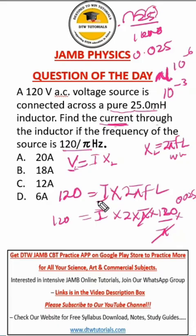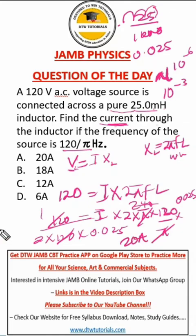Quickly, two times 120 is 240. Instead of multiplying everything, I'll do 1 divided by 2 times 120 times 0.025. When you use your calculator, you get 20 amperes, and our answer here is A.